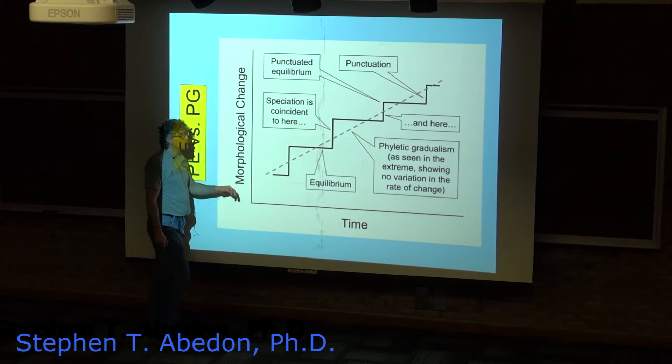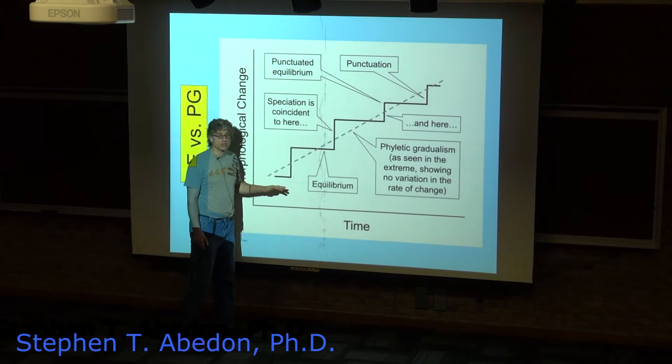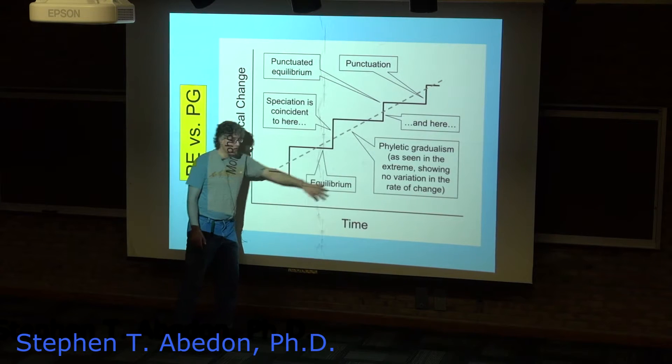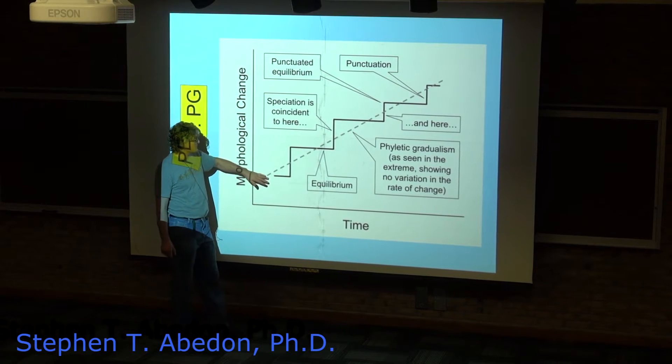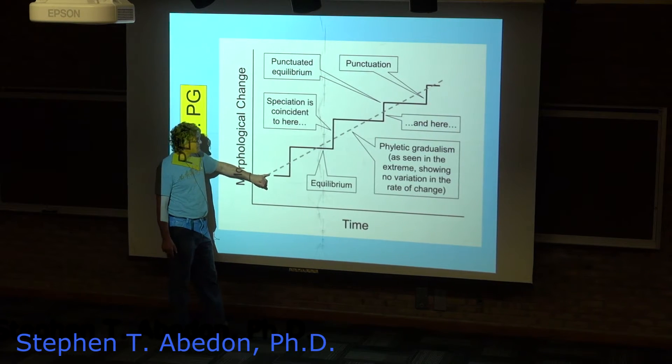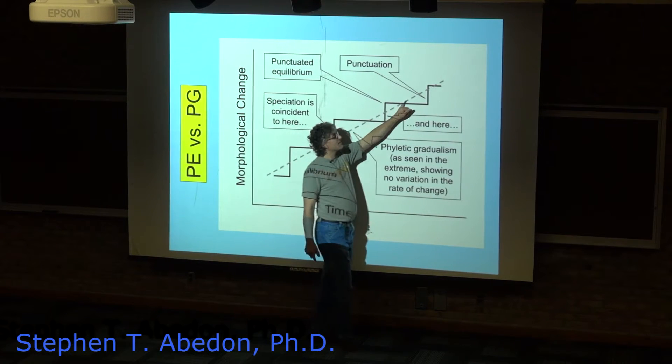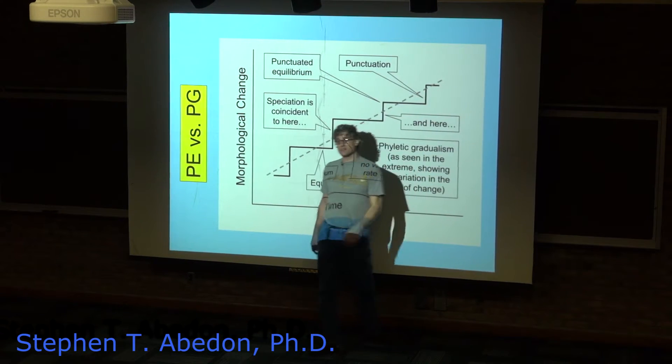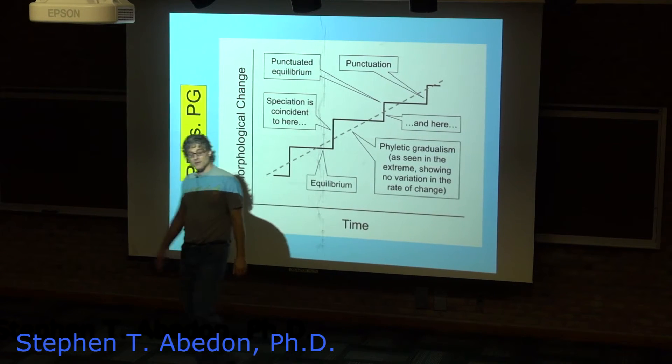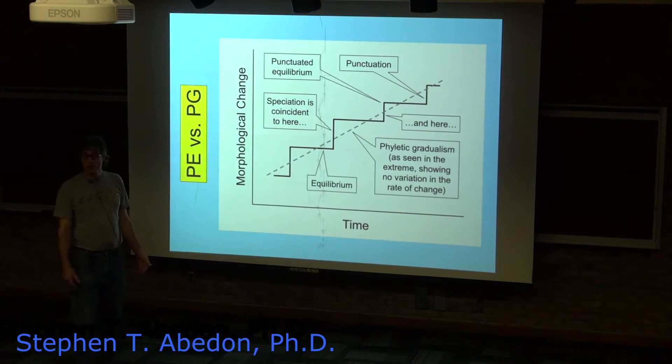You've got two hypotheses for how change occurs over time—long periods of time over multiple species in the fossil record. You either have phyletic gradualism, where you have essentially a low variance in the rate of change, so change is more or less constant.